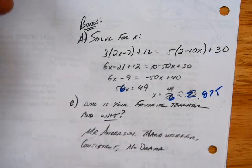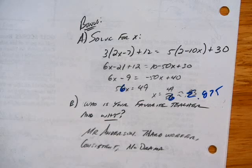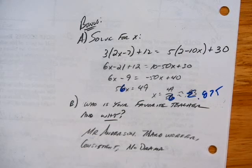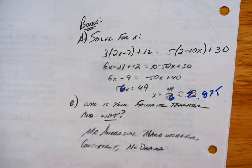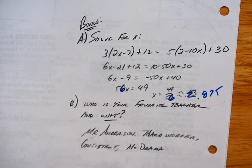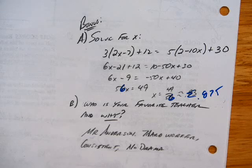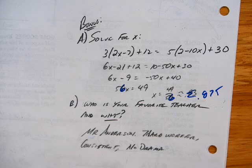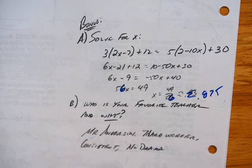Bonus B was all over the board — I had probably 9 or 10 different people chosen. Most commonly chosen was Mrs. Learman, right behind was Selk, then myself, Mrs. Nelson. There were a couple of Lundqvists in there, and Mr. Dennis got quite a few votes. It's interesting to see why you guys like certain teachers.